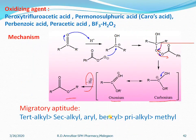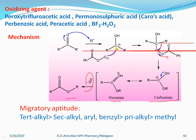The mechanism for the Baeyer-Villiger rearrangement begins with protonation of the ketone to form a protonated ketone. The second step is the nucleophilic attack of the peracid on the protonated carbonyl carbon, which gives an intermediate called a peroxide.